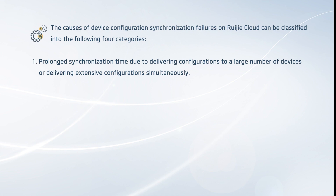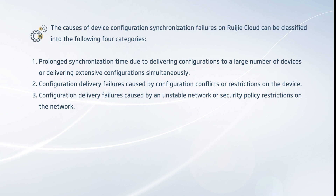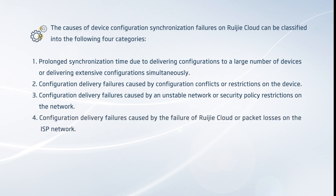The causes of device configuration synchronization failures on Wegea Cloud can be classified into four categories: 1. Prolonged synchronization time due to delivering configurations to a large number of devices or delivering extensive configurations simultaneously. 2. Configuration delivery failures caused by configuration conflicts or restrictions on the device. 3. Failures caused by an unstable network or security policy restrictions. 4. Failures caused by a Wegea Cloud failure or packet losses on the ISP network.